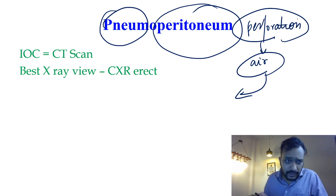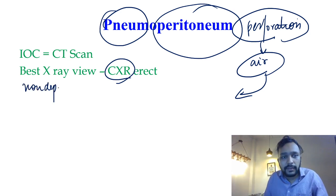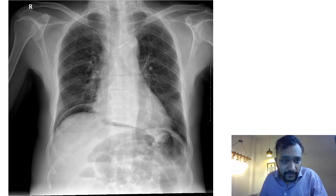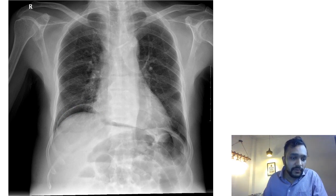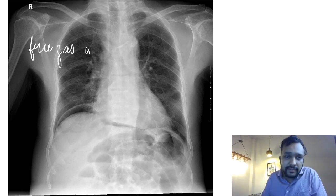When you do an X-ray for this patient, air is radiolucent. On a standing erect X-ray, air will collect in the non-dependent part of the peritoneal cavity, which is beneath the diaphragm. In a normal X-ray, just below the right lobe of the diaphragm you only see the liver, but here we can see a radiolucency below the right dome of the diaphragm. We report this as collection of free gas under the right dome of the diaphragm.